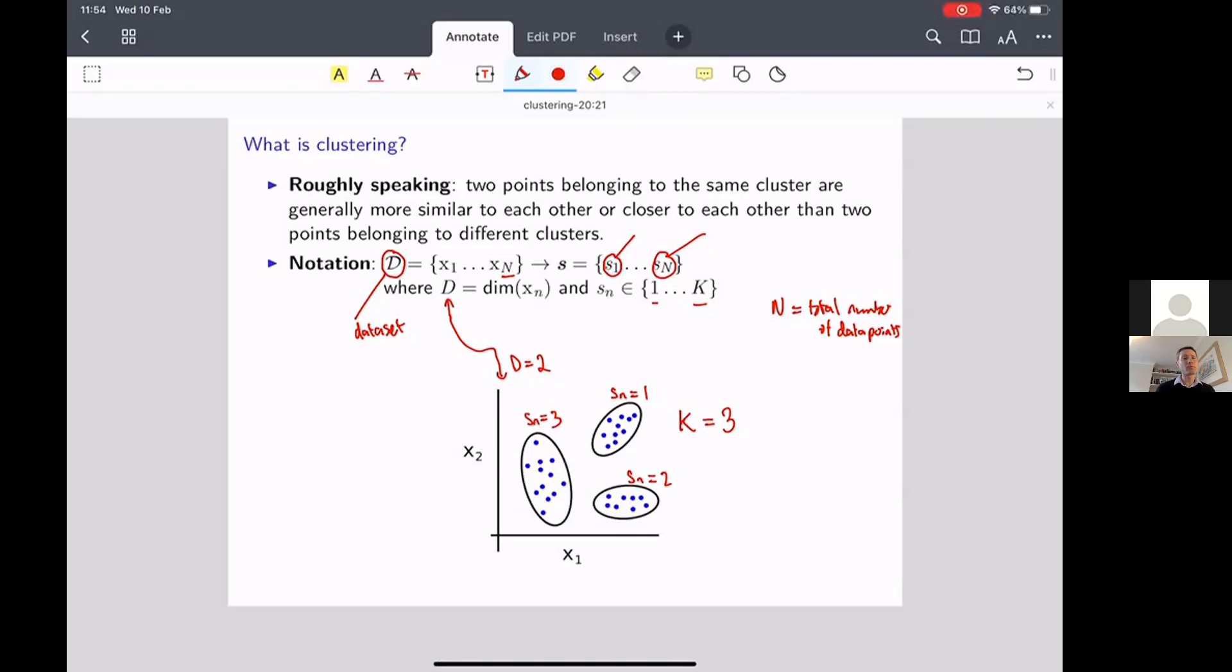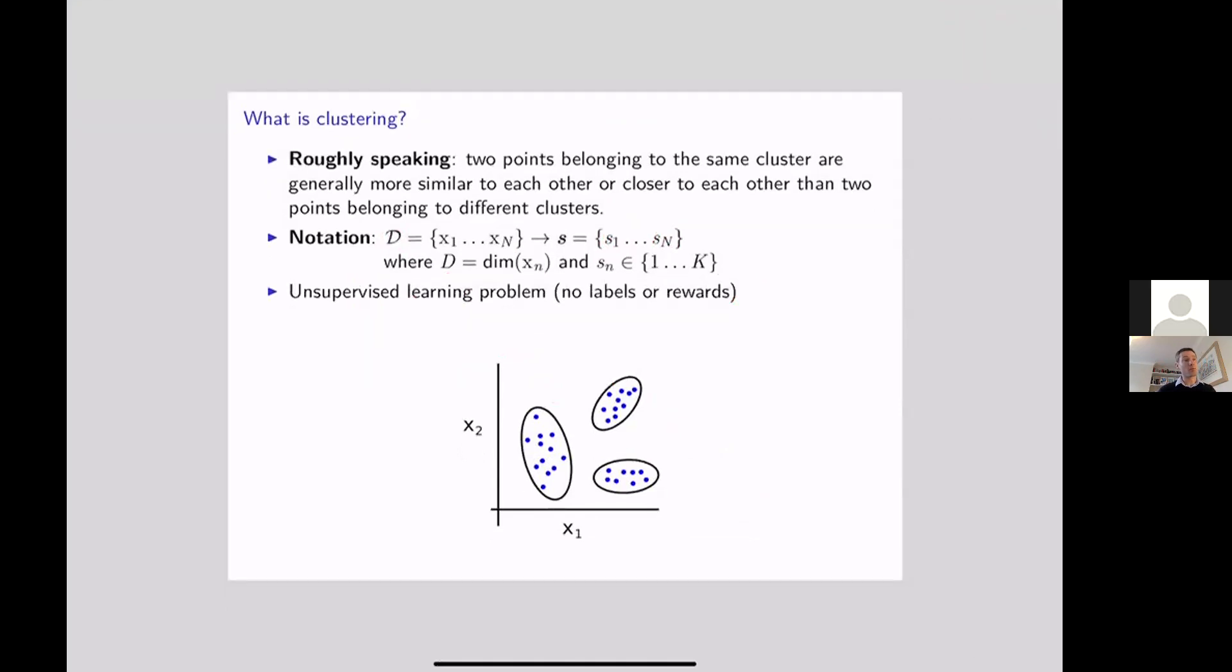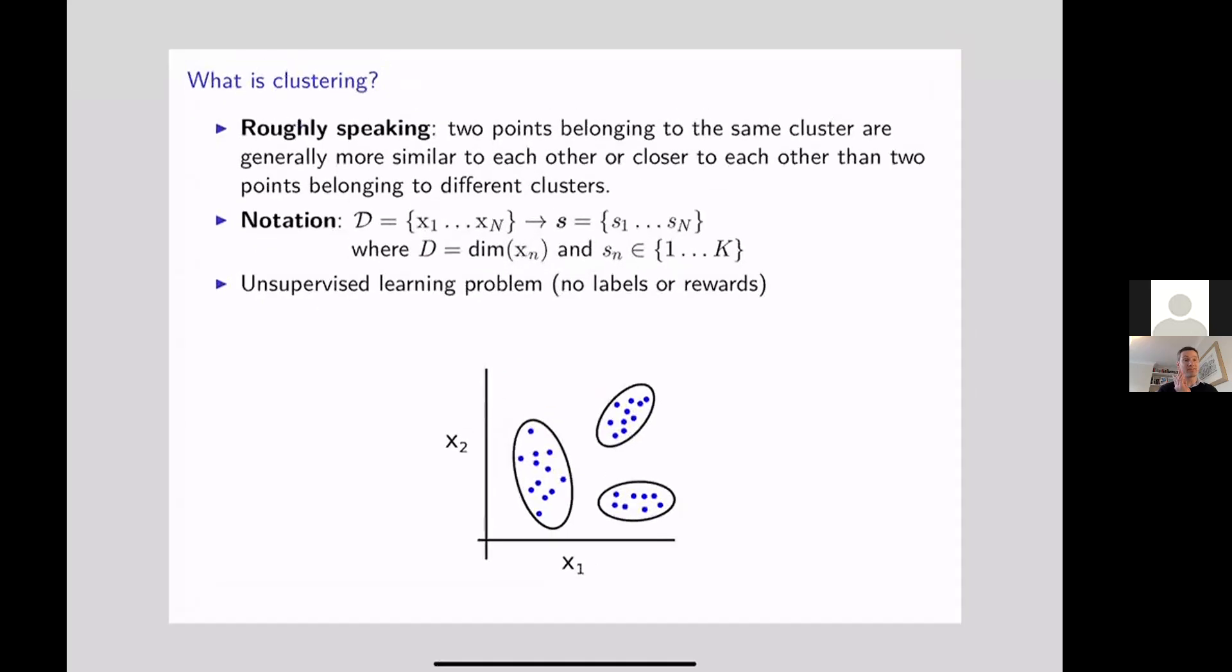So notice this feels a little bit like classification in the sense that for each data point we have to assign it to one of K discrete values indicating which cluster it comes from. So it's a bit like classification when we have to classify each data point into one of K categories. However,